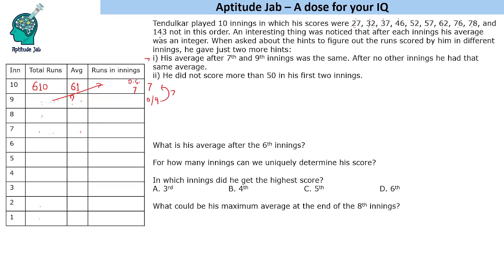Checking the scores: 27 gives digit sum 9, not 7; 32 gives 5; checking others — 15 gives 6, and 8. There is only one number with digit sum 7. Even without knowing the digit sum trick, hit-and-trial would identify it. So he scored 52 in the 10th innings, which makes the total 610. Subtracting 52 gives 558.